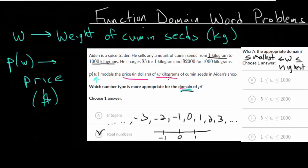Whereas the money, remember, that's the price, that's our dependent variable, that's our function variable—that would be the range. So it's not going to be from $5 to $2,000, because that's dealing with the price value. And we want to deal with the domain, the weight of cumin seeds. And that goes from 1 kilogram to 1000. So choice letter A would be the correct answer here.